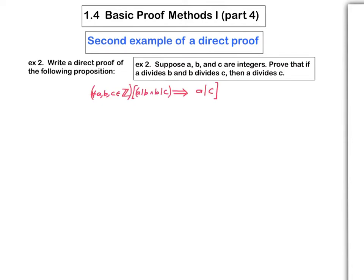So since this is universally quantified and it's P implies Q, then the direct proof would begin with the sentence: let A, B, and C be integers. Suppose A divides B and B divides C. And the very last sentence would be something like, therefore A divides C.